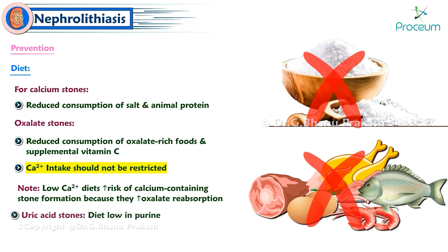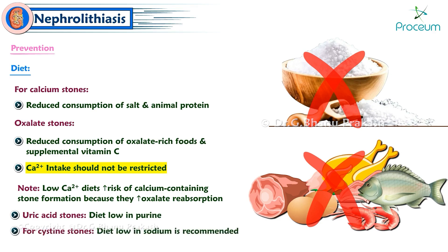For uric acid stones, a diet low in purines is recommended. For cystine stones, a diet low in sodium is recommended.